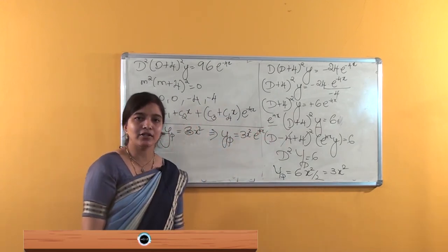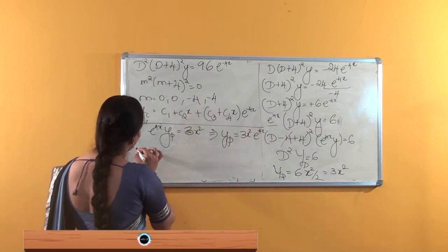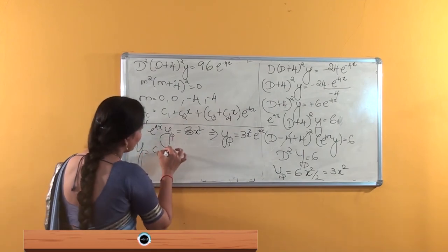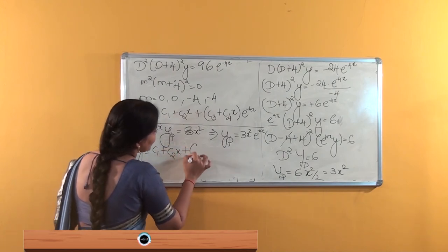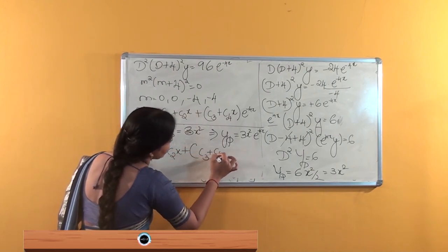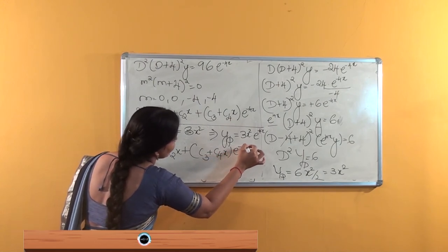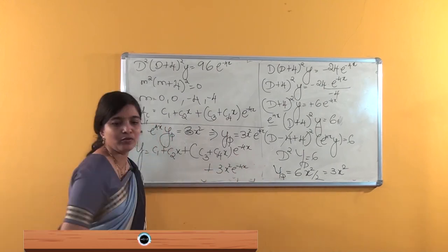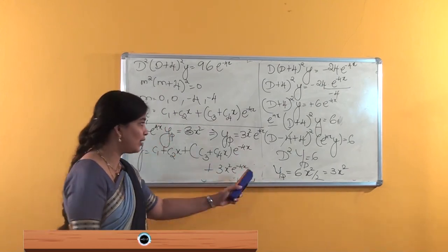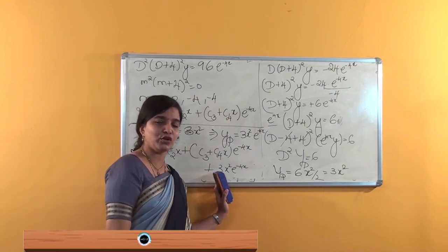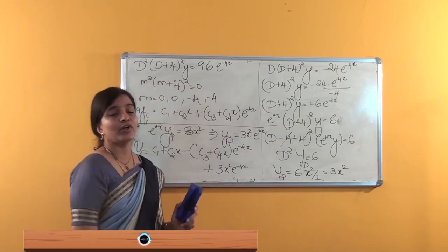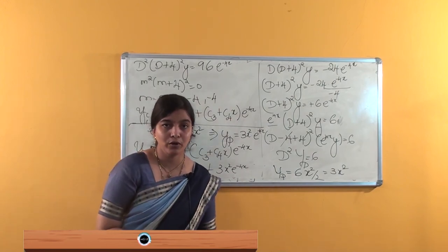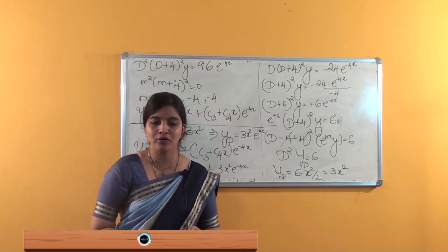Now we write the general solution. The general solution is y equals yc plus yp, that is y = (c1 plus c2·x) plus (c3 plus c4·x) e to the power minus 4x, plus 3x squared e to the power minus 4x. This is the method of finding the solution of D squared (D plus 4) whole squared y equals 96 e to the power minus 4x.